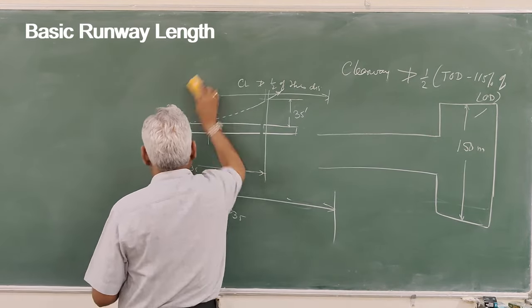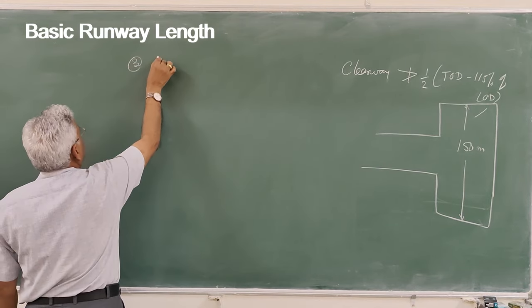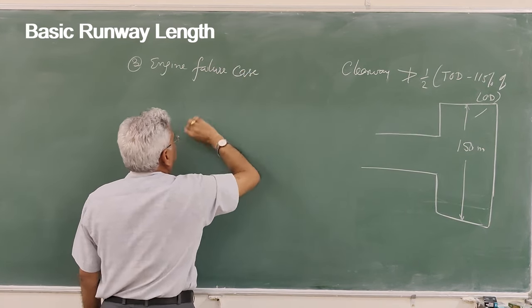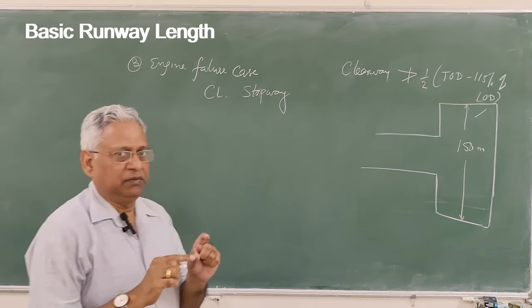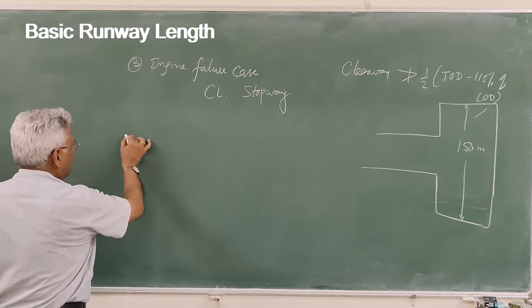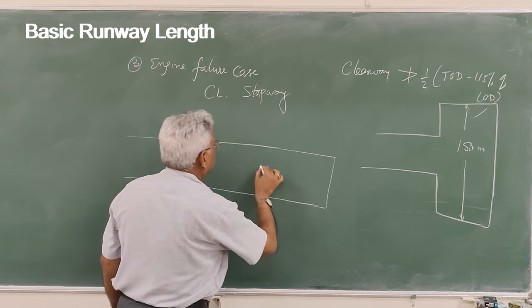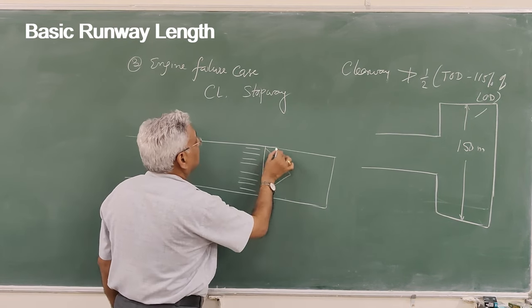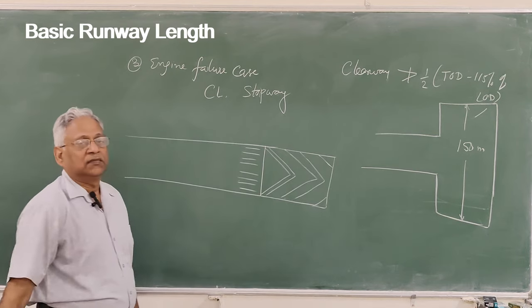The third case is engine failure. In case of engine failure, there can be two sub-cases. The engine failure case may require clearway or stopway. There is a difference between clearway and stopway. Clearway is a graded area — not full-strength pavement. Stopway is the extension of the runway. It is the extension of the runway up to the threshold marking, and it is provided to support the weight of the aircraft.